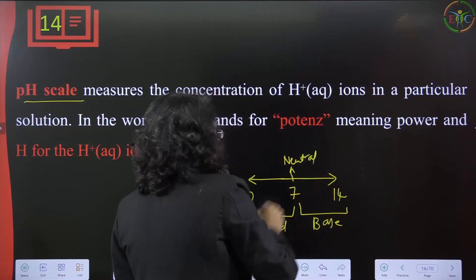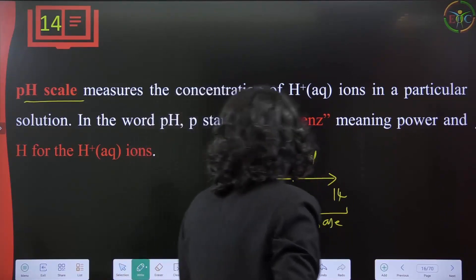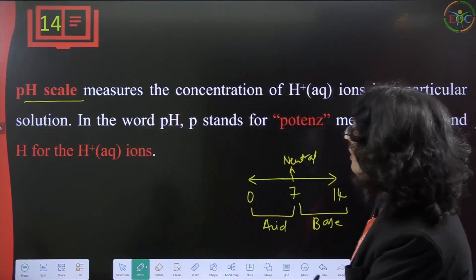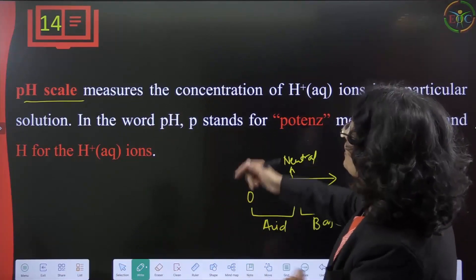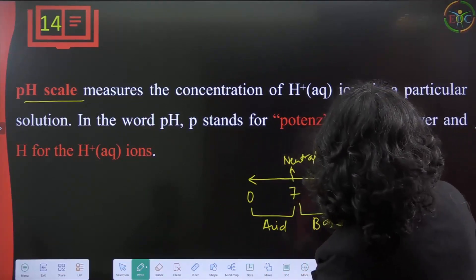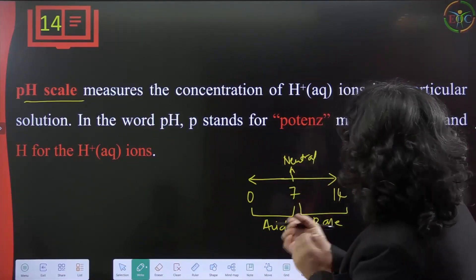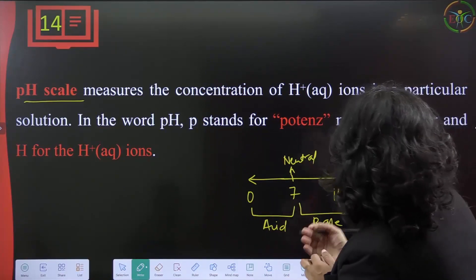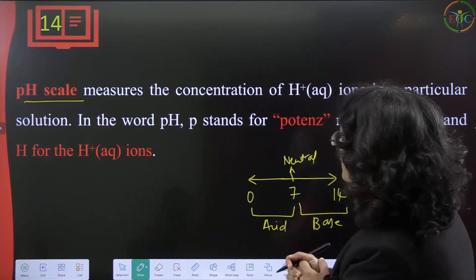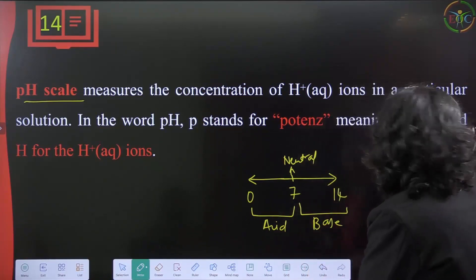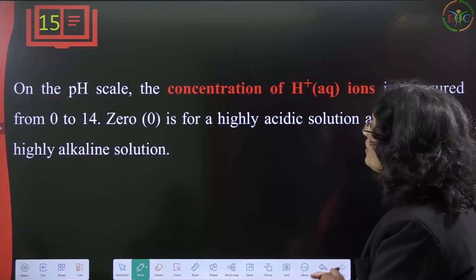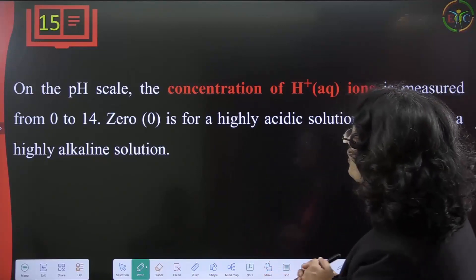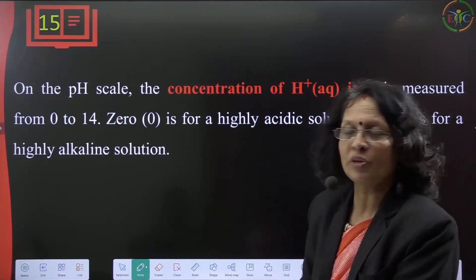Water generally has a pH of 7. Acids come below 7 and bases come above 7. The letter 'p' in pH stands for 'potenz' (power) and H represents H⁺ ion concentration. On the pH scale, concentration is measured from 0 to 14.